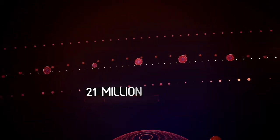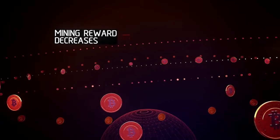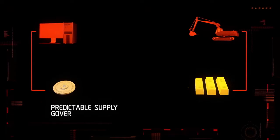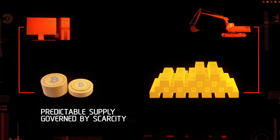The system is programmed so that only 21 million Bitcoins will ever exist, and as time goes by, the mining reward decreases. The result is a predictable supply that's governed by scarcity, making Bitcoin somewhat like a digital gold.